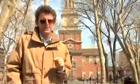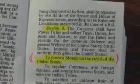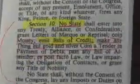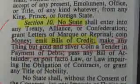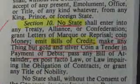Strangely, the Constitution allows the federal government to borrow money but is silent on the federal role in printing paper money — known in the language of the day as "emitting bills of credit." This defect in the Constitution is at the root of all our economic problems today.